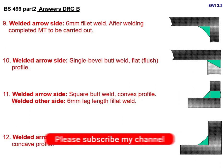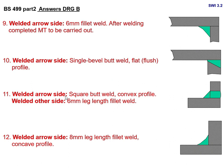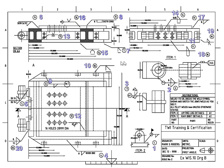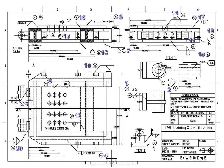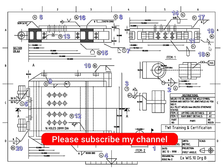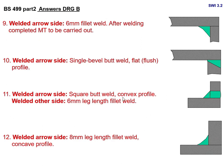Joint number 11 — one side is a V and the other side is also a V in appearance. The joint is: welded arrow side — square butt, 2L, convex profile; welded other side — 6 mm leg length fillet weld. One side is the fillet weld and the other is the single bead group with square butt and convex profile.